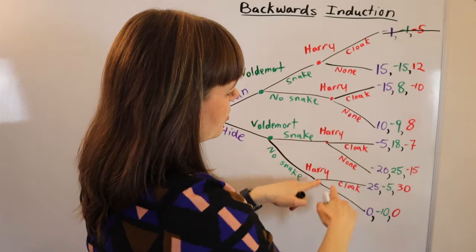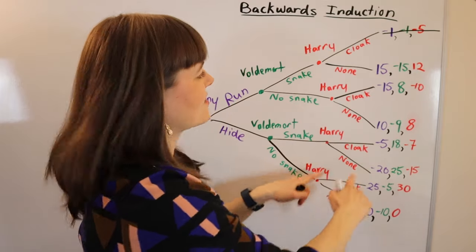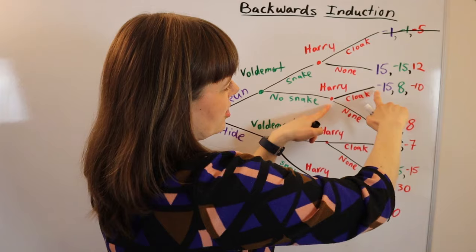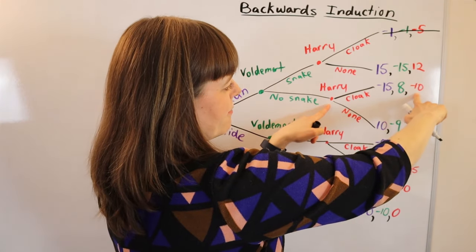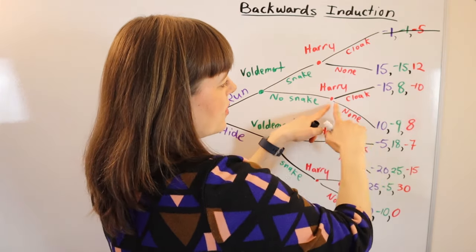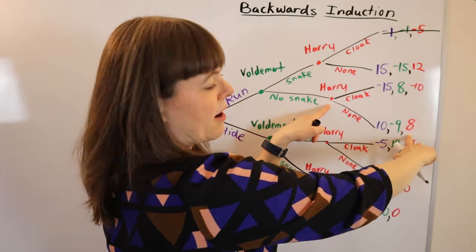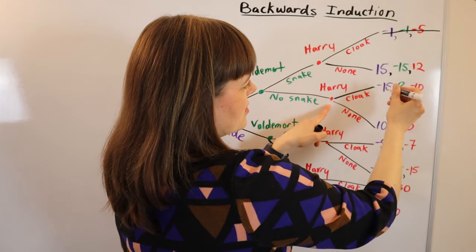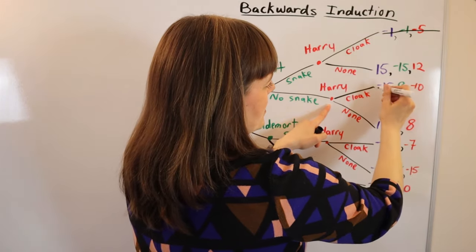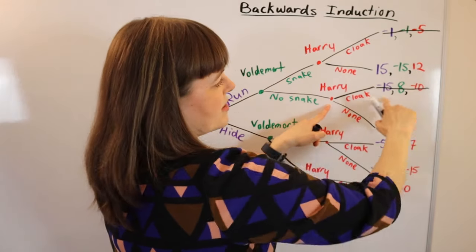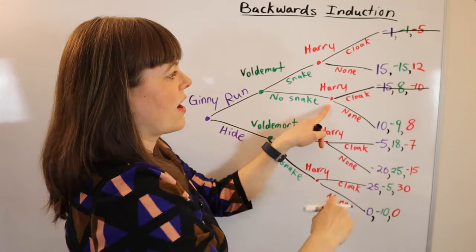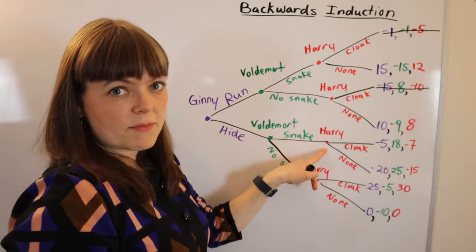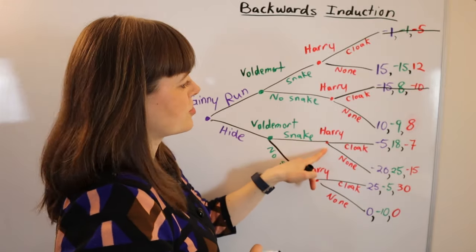We solve every single end node — all of Harry's decisions. At the next node, Harry's payoff is negative 10 for cloak and 8 for no cloak, so he prefers 8 and everyone crosses out the cloak outcome. We do the same thing for his other two nodes.